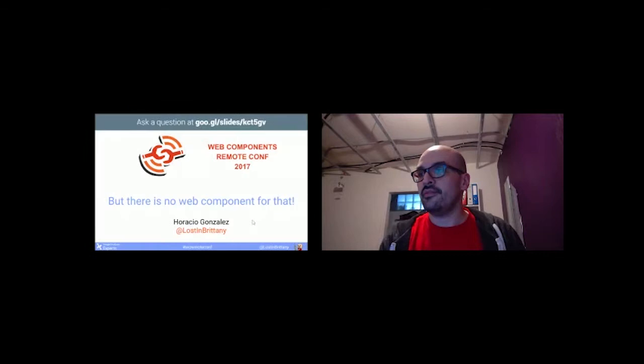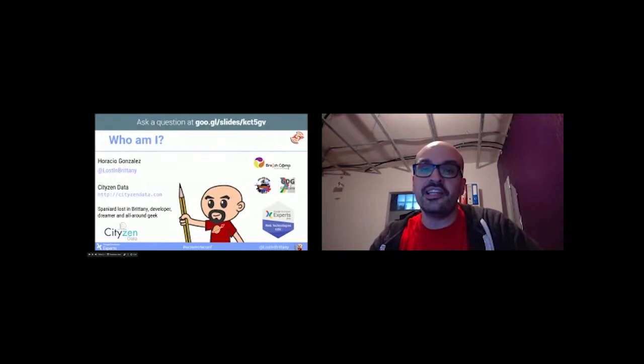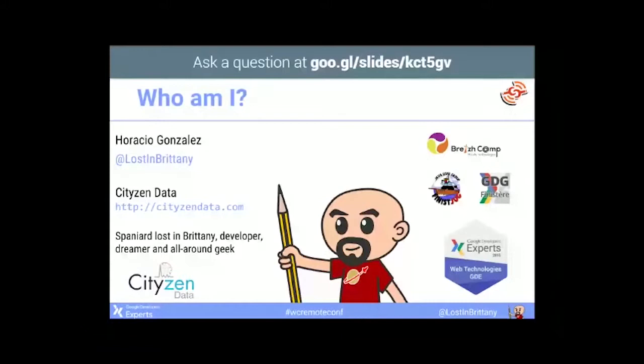Hello. Who am I? I am Horacio Gonzalez. I am a Spanish developer living in France. I have been there for almost 20 years. So my English accent combines the worst traits of Spanish and French people. I know you are going to endure that for 30 minutes. I am rather active in the local developer ecosystem, Java user group, Google developer groups. I also speak about Polymer and web components in several conferences and meetups. I do some teaching about it. And Google last year appointed me as Google Developer Expert on web technologies.